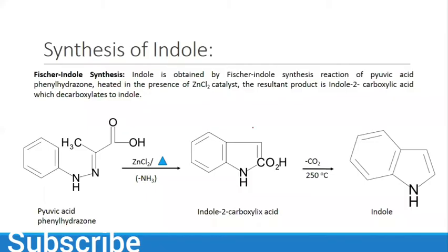Indole is obtained by Fischer-indole synthesis reaction of pyruvic acid and phenylhydrazone, heated in the presence of ZnCl2 catalyst. The resultant product is indole-2-carboxylic acid. By decarboxylation of indole-2-carboxylic acid, we have our indole which is the final product.